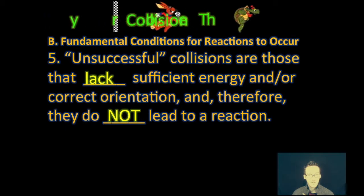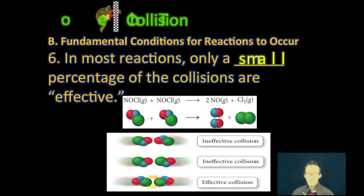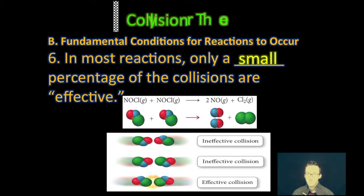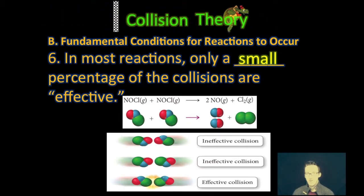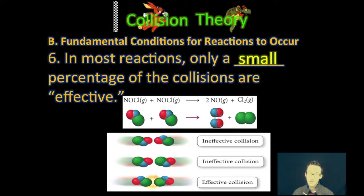Unsuccessful collisions are those that lack sufficient energy and/or correct orientation and therefore do not lead to a reaction. In most reactions, only a small percentage of collisions are actually effective. When we talk about percent yield, we may bring collision theory into play. Recognize that those two things must happen for the reaction to be successful: we have to have the correct amount of activation energy, and they have to collide with the correct orientation.